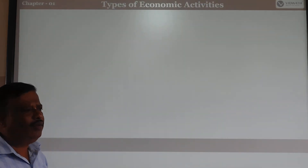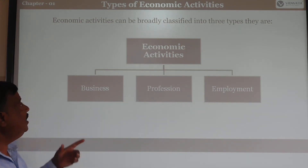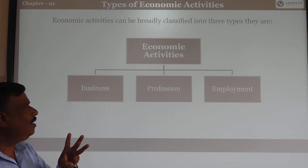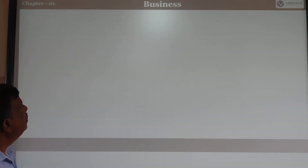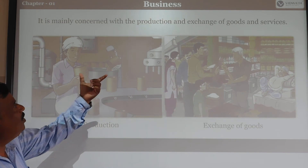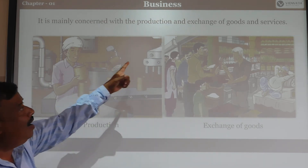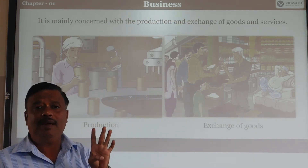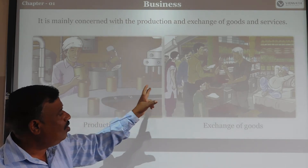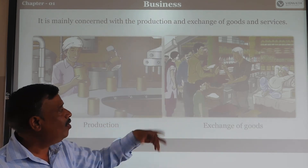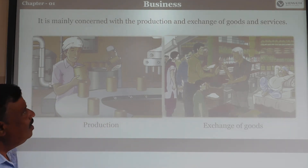What are the types of economic activities? Economic activities are classified into three categories: one is business, second is profession, and third is employment. Business is mainly concerned with the production and exchange of goods and services. Business involves producing things and also exchanging those goods and services from one person to another — that is called business.